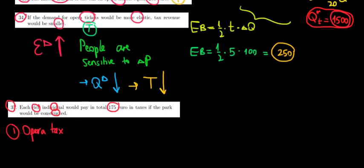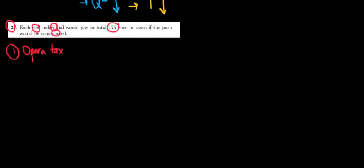So we have 1500 tickets and we have 5 euros tax for every ticket. In other words, the tax revenue collected from the opera tickets would be equal to 5 times 1500, that's equal to 7500 euros collected through the opera tax.